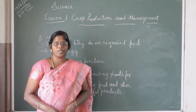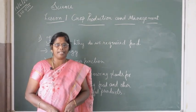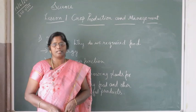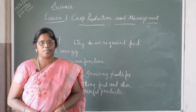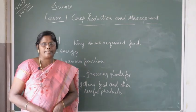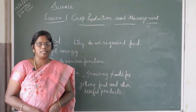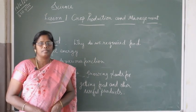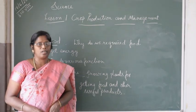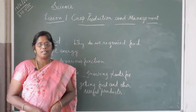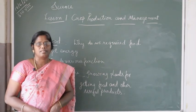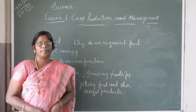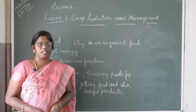When plants of the same kind are cultivated at the same place on a large scale, it is called a crop. For example, wheat crops means grown plants in a field that are all of wheat. There are different types of crops such as cereals, pulses, oil seeds, sugarcane, coffee, tea, and so on.